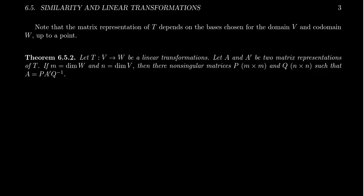Welcome back, everyone. In the previous video, we saw an example of how one can calculate a matrix representation for a linear transformation relative to any basis of the domain and co-domain V and W. But it turns out that if you choose different bases for V and W, choosing different bases will give you a different matrix representation. So how much do these matrix representations change and how much do they stay the same? They do actually kind of stay the same, only up to a point. This theorem is going to give us some explanation of what we mean by that.